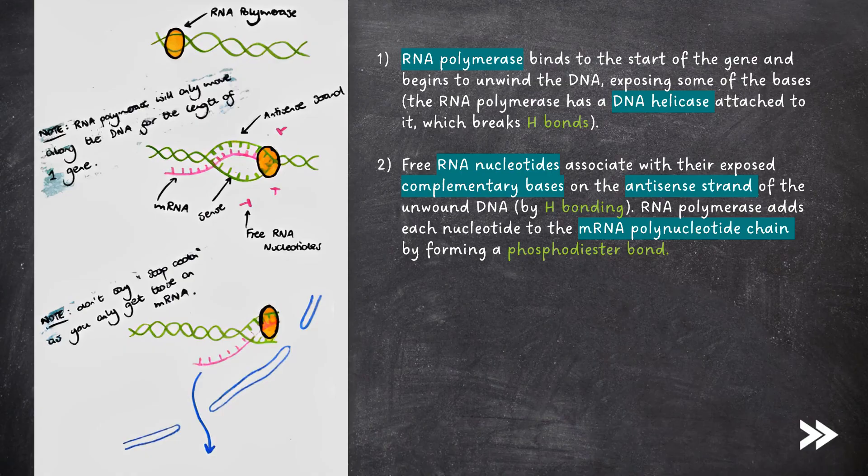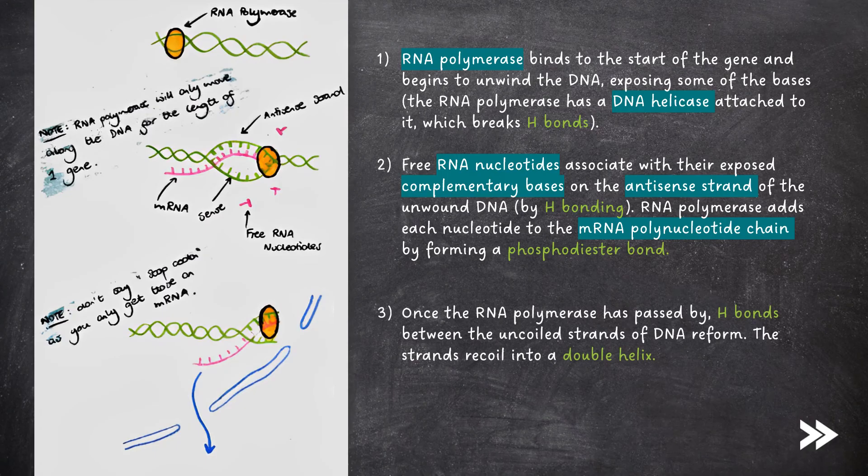RNA polymerase then adds each nucleotide to the mRNA polynucleotide chain by forming a phosphodiester bond. Once the RNA polymerase has passed by, hydrogen bonds between the uncoiled strands of DNA reform. The strands then recoil into a double helix.